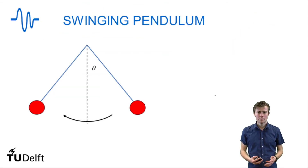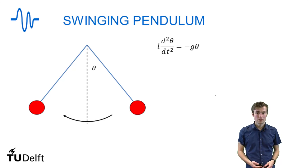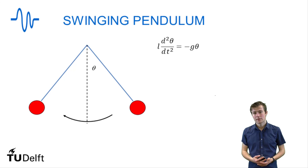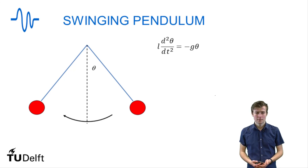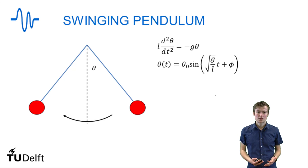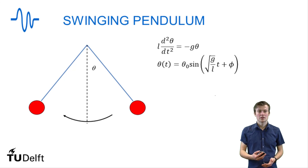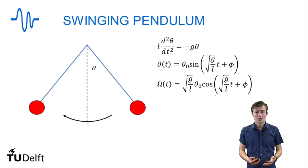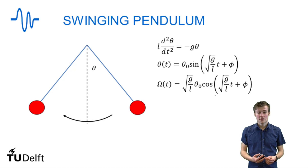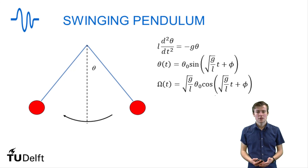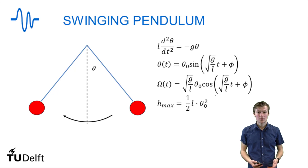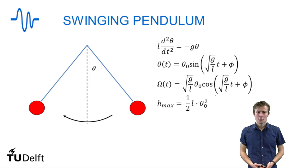To recap what we have done: we looked at a swinging pendulum where the motion is described by the differential equation l times the second derivative of theta equals minus g times theta. The solution is theta equals theta zero times the sine of the square root of g over l times t plus phi. The angular velocity is the square root of g over l times theta zero times the cosine of the square root of g over l times t plus phi. With this, we determined that the maximum height we can get is one half times l times theta zero squared. Thank you for watching and good luck with your exercises.